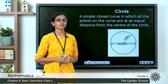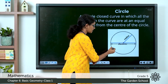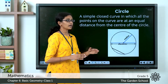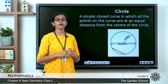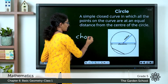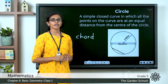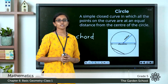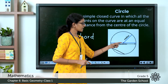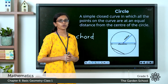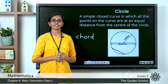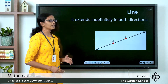If you connect any two points on the circle, you get a straight line from one point to another on the circle. Such a line is called a chord — spelled C-H-O-R-D. A chord that passes through the center of the circle is called the diameter. It starts from one point on the circle, passes through the center, and extends to another point on the circle. The diameter is the longest chord of a circle.